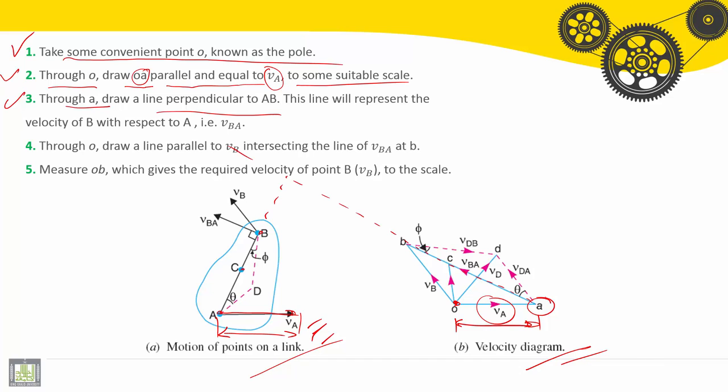This line is perpendicular to AB. This line will represent the velocity of B with respect to A, relative velocity VBA.